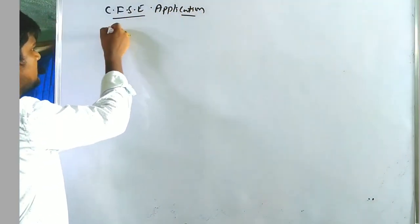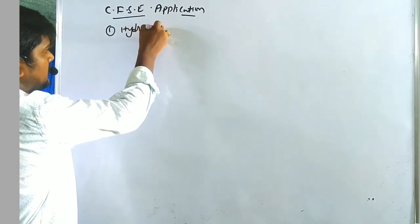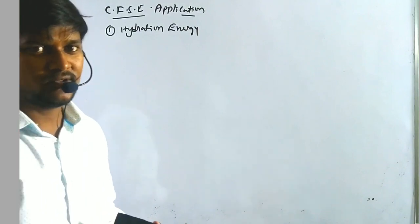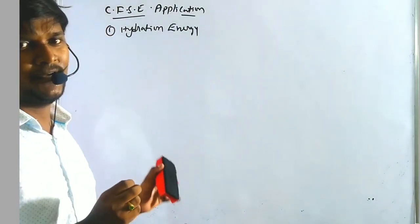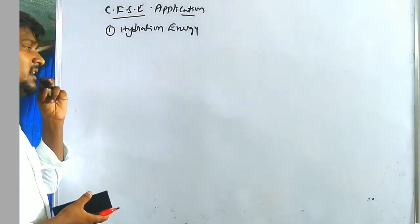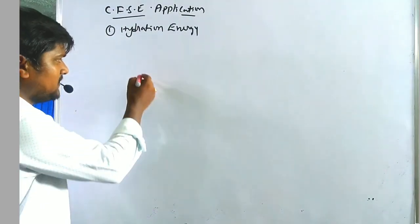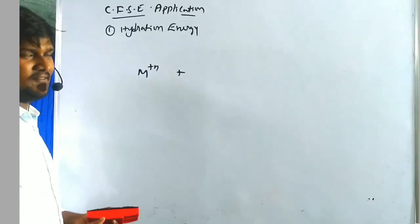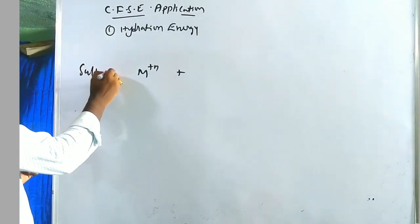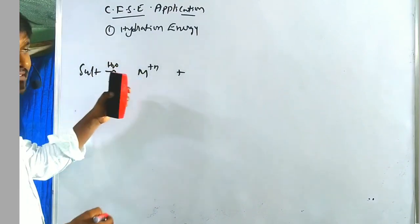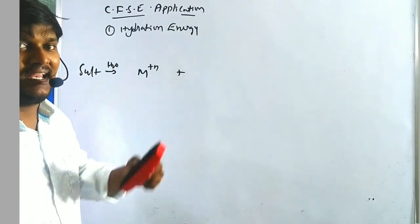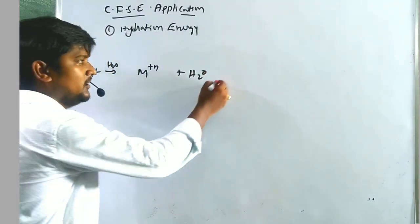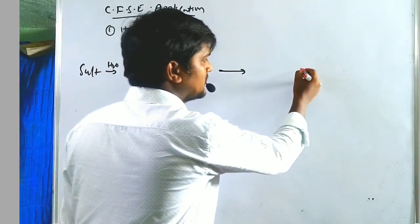The first application is hydration energy. Before going to the topic, we have discussed about a very small basic point regarding hydration energy. Now, if we have any metal cation, whenever this metal cation is produced from a salt dissolved in water, it produces the metal cation and the halide anion, and it has several water molecules coordinated with it.